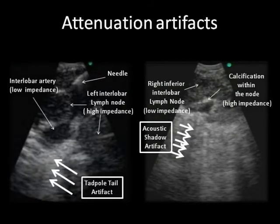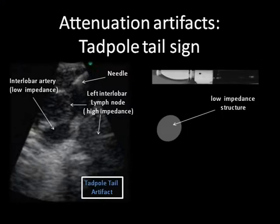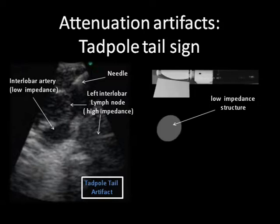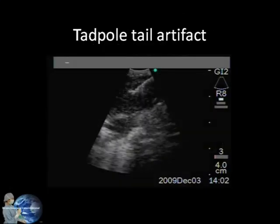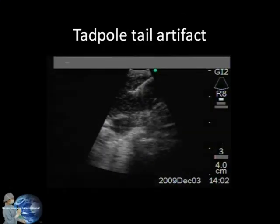Attenuation artifacts occur when the ultrasound beam encounters structures with different acoustic properties within the same scanning plane. The tadpole tail artifact, for example, occurs when the echo at the distal border of a low-density structure, such as a calcified lymph node, is hyperechoic compared to that of surrounding tissues. Here is an example of the tadpole tail artifact.